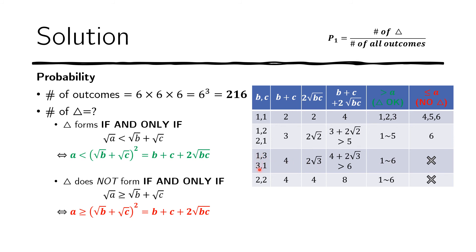Now starting with B=2: the case B=2, C=2 gives B + C + 2√(BC) = 2 + 2 + 2×2 = 8, which already exceeds 6. So any value of A works. There is no need to check B=2,C=3 or larger, since those cases are all better. We have now covered all worst cases and can proceed to counting.